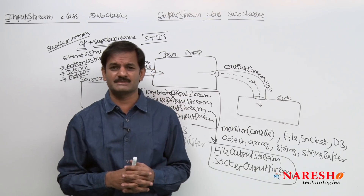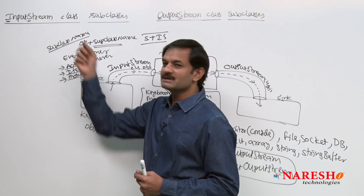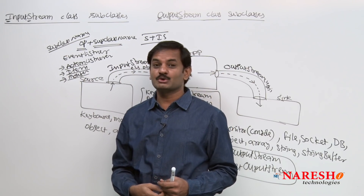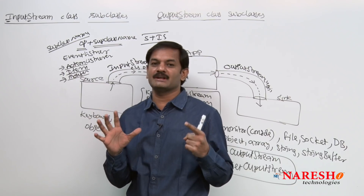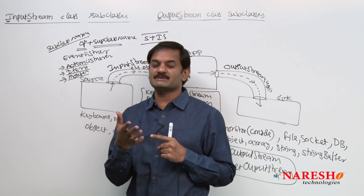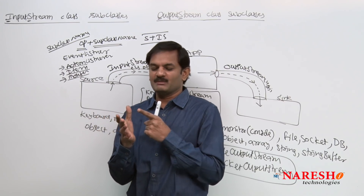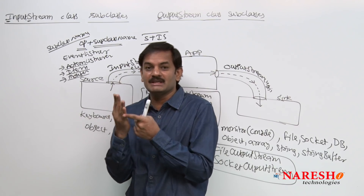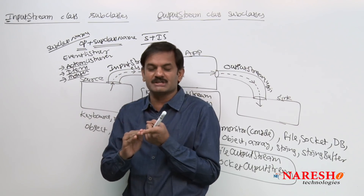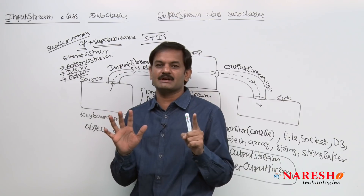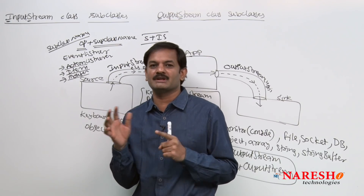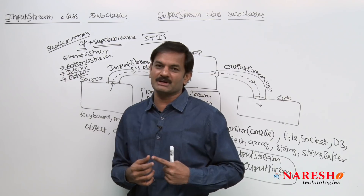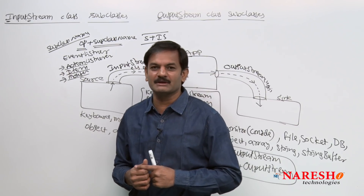I have a question here — try to observe. Input stream class is which type of class? There are totally six types of classes available in Java. What are the six types of classes? Number one: interface, abstract class, concrete class, final class, enum, annotation. Totally six types of classes are there to implement real-world objects in Java programming as part of object-oriented programming.